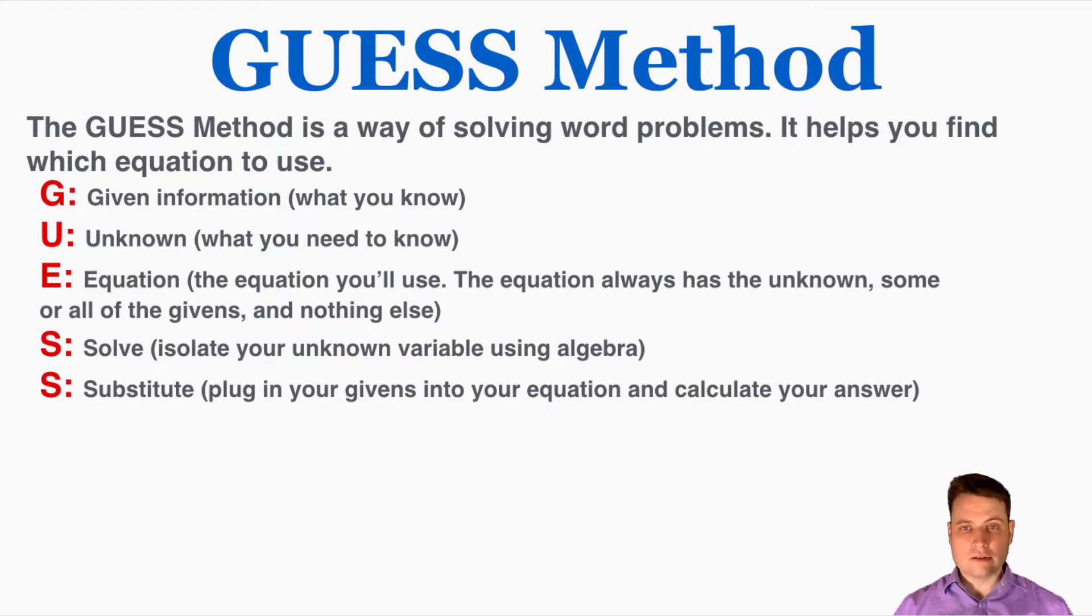U stands for the unknown, that's the thing that you're trying to solve for in the problem. E means the equation, which is the equation that you'll use. The equation always has the unknown, some or all of your givens, and nothing else. That's going to be the most important part of the GUESS method, identifying which equation to use.